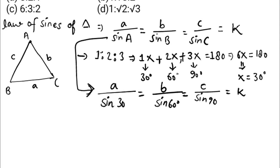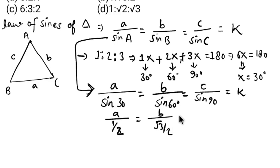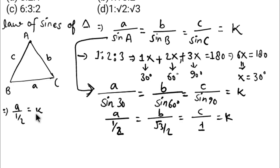Now we have to find a, b, and c. I substitute the sine values: sin(30°) = 1/2, sin(60°) = √3/2, and sin(90°) = 1. So the equation becomes: a / (1/2) = b / (√3/2) = c / 1 = K.